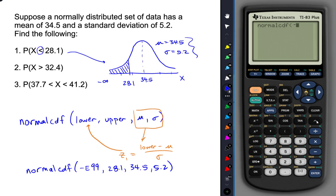So hit the negative here. Make sure not to use the minus. Second and comma to get that small capital E, which represents scientific notation. The 99th. And then 28.1 is the upper bound of our shaded region. 34.5 is our mean. And 5.2 is the standard deviation. And the calculator will come up with the area under the curve of that shaded region, which is what we interpret as our normal probability.